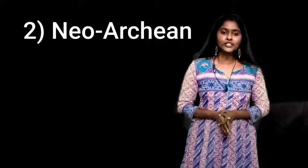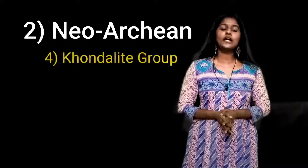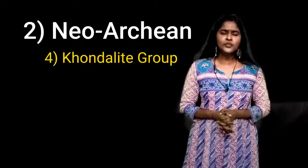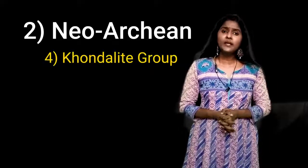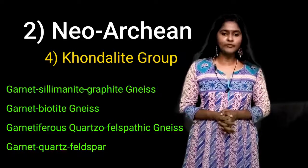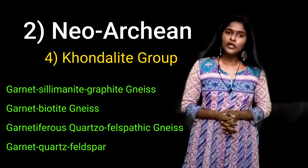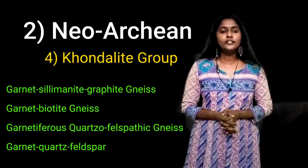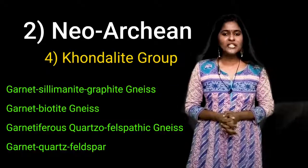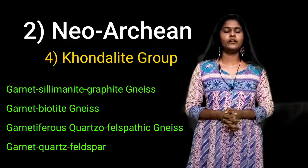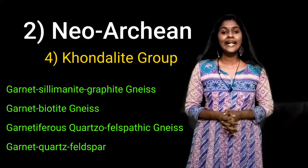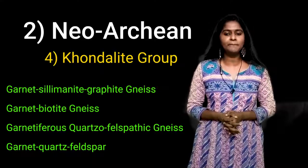The fourth category of Neoarchean Eon is the Khondalite group. The term Khondalite group is used to designate an assemblage of many rocks like garnet-sillimanite-graphite gneiss, garnet-biotite gneiss, garnet-bearing quartzite, felspathic gneiss, garnet quartzite and neosomes. This assemblage of rock is known as Kerala Khondalite Belt.